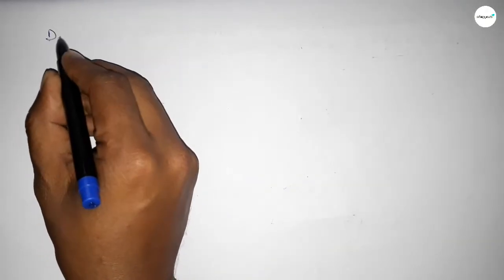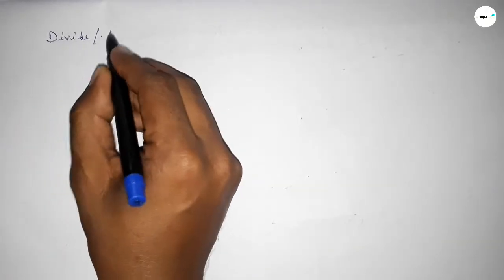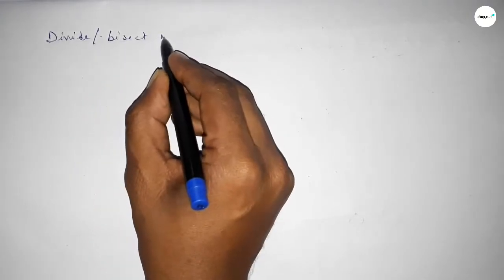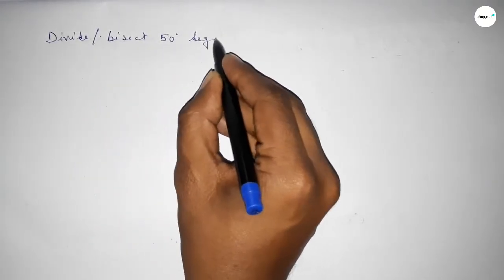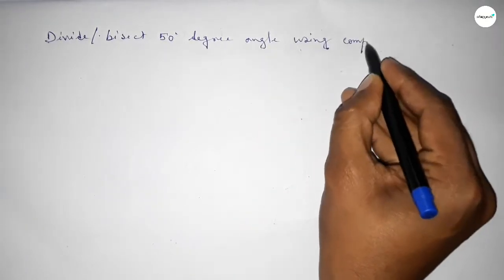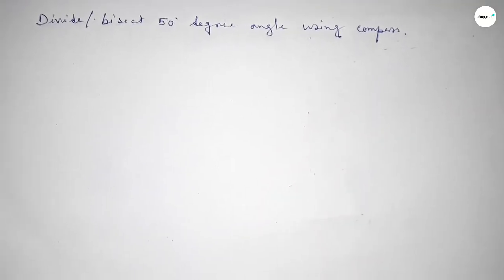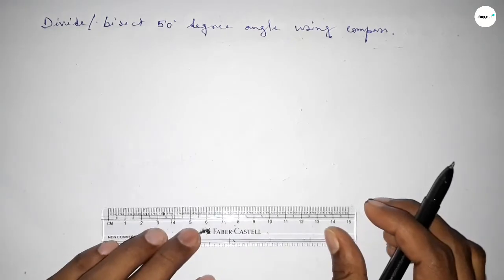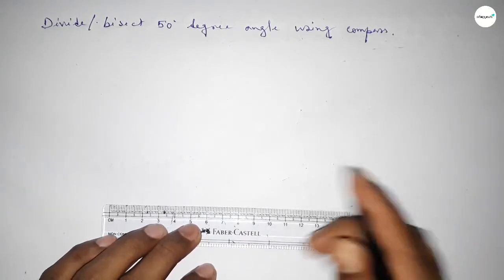Hi everyone, welcome to SI Share Classes. Today in this video, we have to divide or bisect a 50-degree angle using a compass. So let's start. First, we have to draw a straight line.